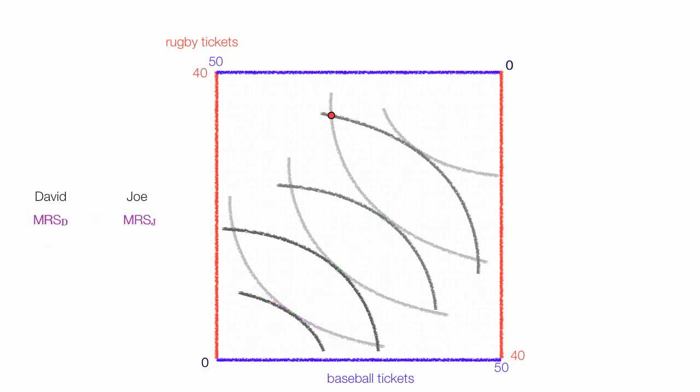The red dot is not efficient because the marginal rate of substitution for David, the slope of the tangent line, is not equal to the marginal rate of substitution for Joe. So we say these are not equal, slopes are not equal, and therefore we call that inefficient distributions.